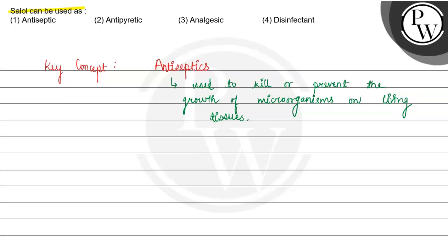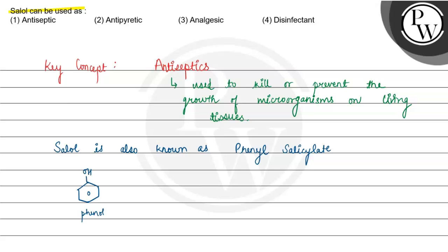Salol is also known as phenyl salicylate. It is formed when we carry out the reaction between phenol and salicylic acid. Phenol reacts with salicylic acid — which has an OH group and a COOH group — to give us Salol, which we call phenyl salicylate.